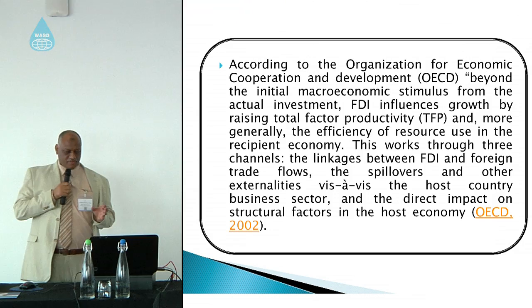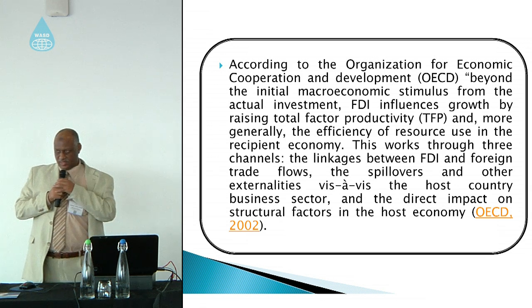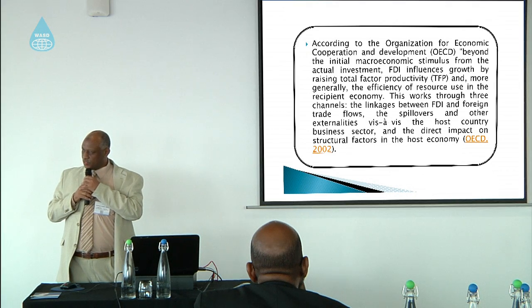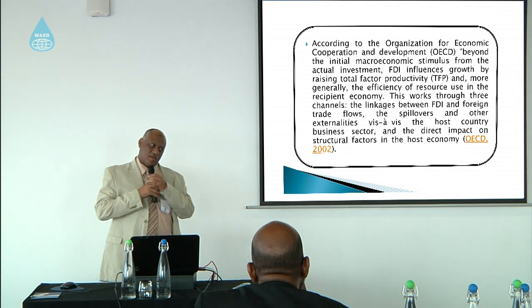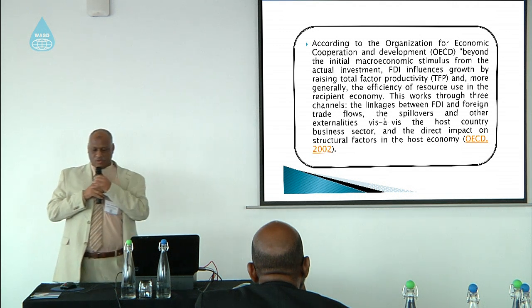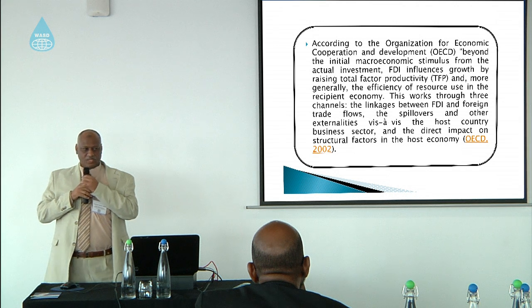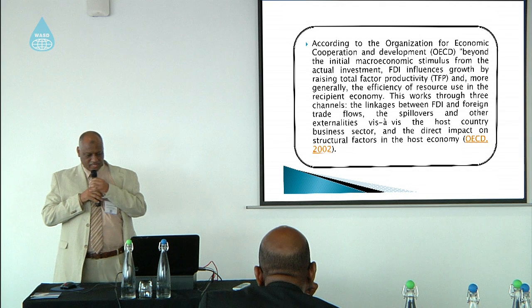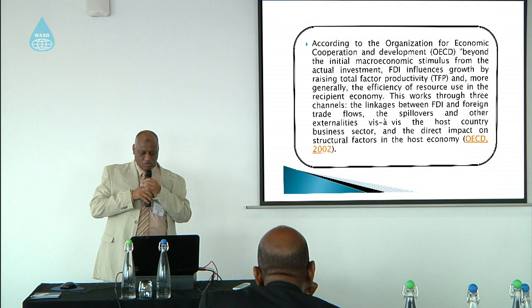We have something very important called total factor productivity. Total factor productivity is a combined contribution of the quality of inputs — not the input itself, not capital or labor or material, but the quality of capital, the quality of technology, and the quality of human capital. The total factor productivity is an indicator of technological progress, which is an indicator of a spillover effect.